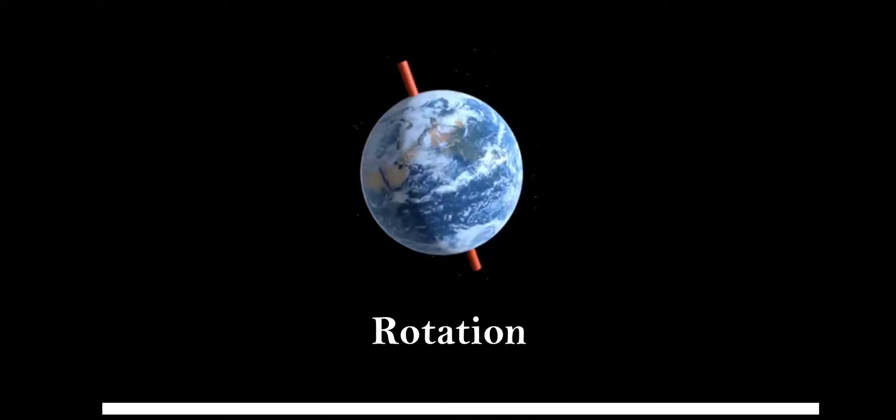Our earth rotates anti-clockwise and completes its rotation in one day, which means 24 hours. The earth takes around 24 hours to complete one rotation around its axis. The period of rotation is known as Earth Day. This is the daily motion of the earth.